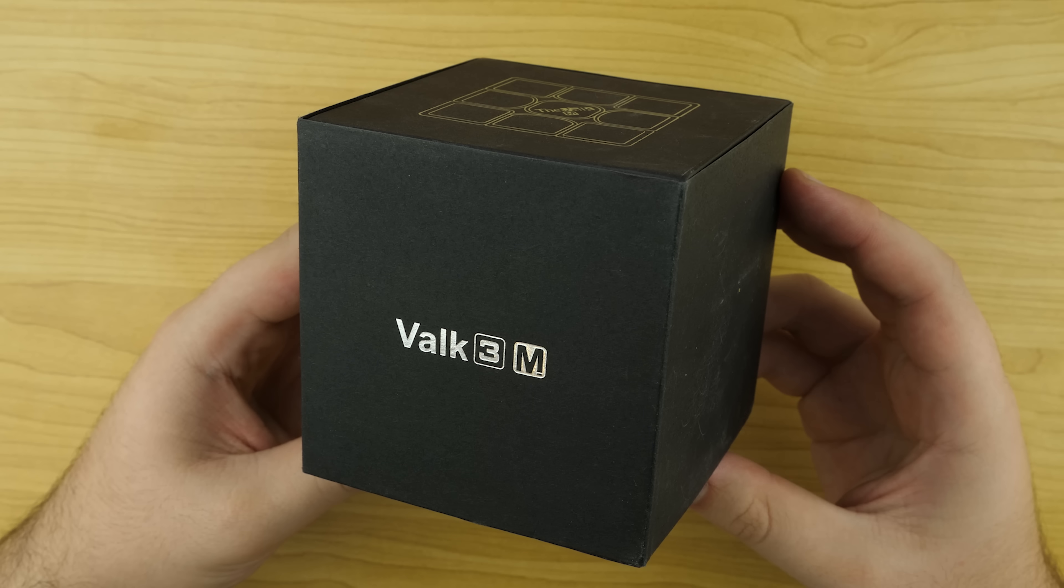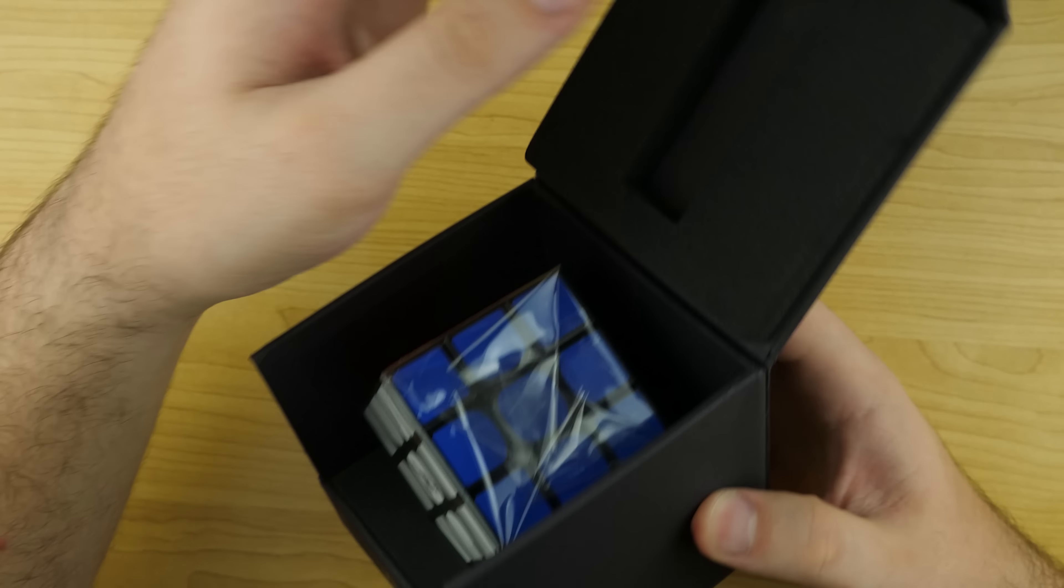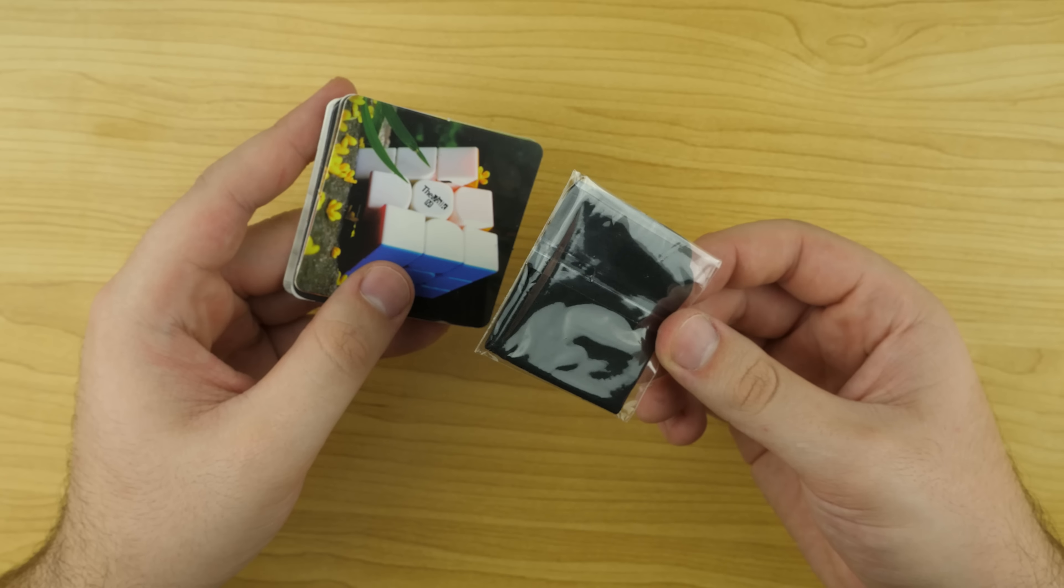Starting with the unboxing experiences we have the Volk 3M first which comes in a sleek black box with a magnetic flap, you get some postcards, a cleaning cloth and the cube itself.